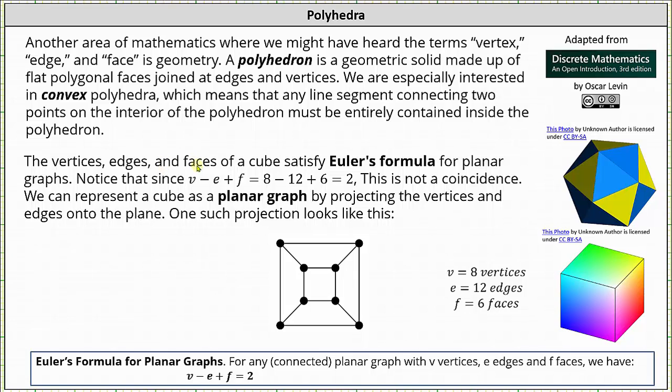The vertices, edges, and faces of a cube satisfy Euler's formula for planar graphs. Looking back at the cube, notice how the cube has eight vertices, 12 edges, and six faces, which indicates for Euler's formula v = 8, e = 12, and f = 6. Applying Euler's formula, notice 8 - 12 + 6 = 2. Euler's formula is satisfied.